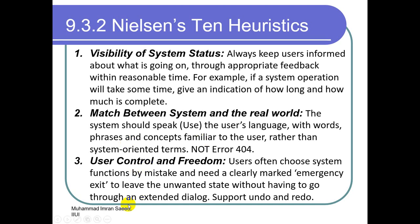Number three: user control and freedom. Users often choose system functions by mistake and need a clearly marked emergency exit to leave the unwanted state without going through an extended dialogue. This concept is that of Control+Z — undo. If I have done something wrong, there must be an option to undo the state and go back to the previous state, giving me a feeling of freedom that I can move back if I make a mistake.